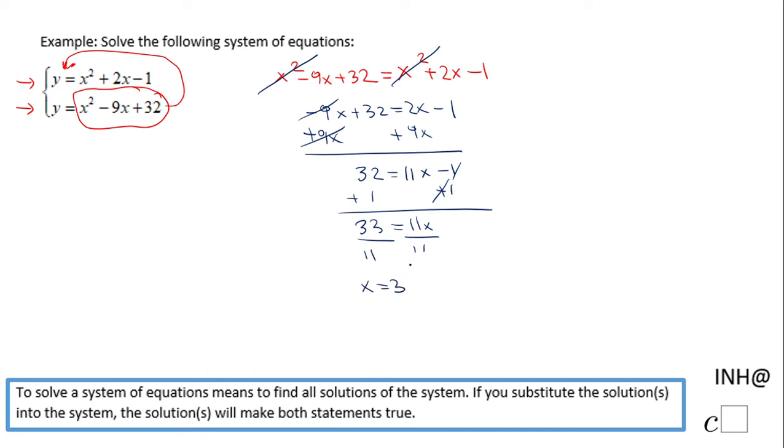And for finishing this problem, we just need to find y. And we can take any of these two equations. Let's say you take the first one, y equals x squared plus 2x minus 1.